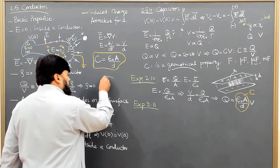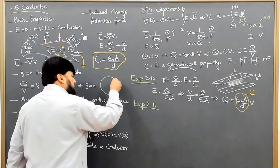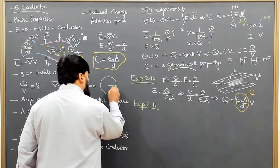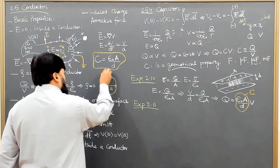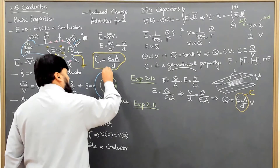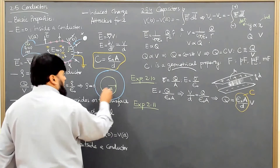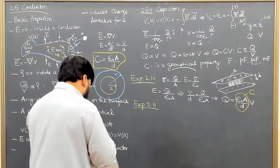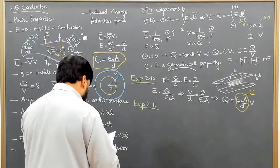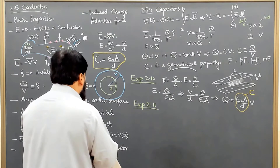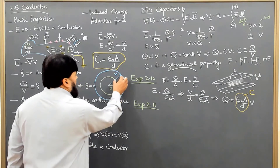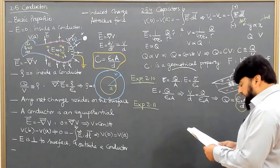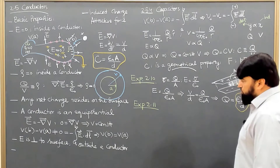The geometry of this capacitor is that one plate is a sphere with radius a, and another spherical plate has radius b. In between them, one is positively charged and the other is negatively charged, forming the geometry of a capacitor. We are asked to find the capacitance of this geometry.